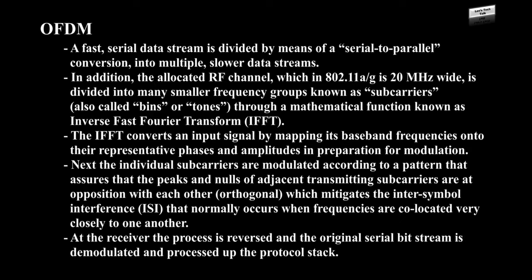In OFDM, a fast serial data stream is divided by means of a serial-to-parallel conversion into multiple slower data streams. In addition, the allocated RF channel, which in 802.11a/g is 20 MHz wide, is divided into many smaller frequency groups known as subcarriers, also called bins or tones, through a mathematical function known as Inverse Fast Fourier Transform, IFFT.